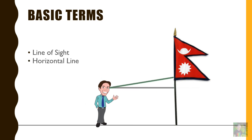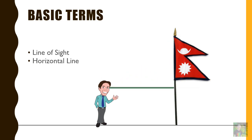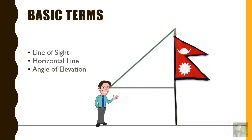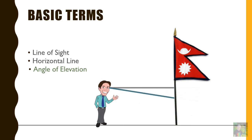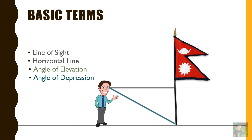If he sees something above the horizontal line, then the angle made between the horizontal line and the line of sight is called the angle of elevation. And if he watches something below the horizontal line, then the angle made between the horizontal line and that line of sight is called the angle of depression. So those were the basic terms to understand height and distance.